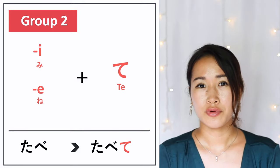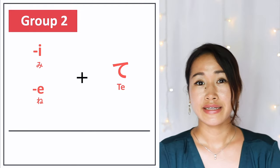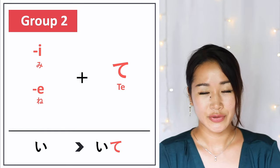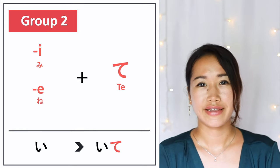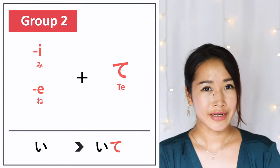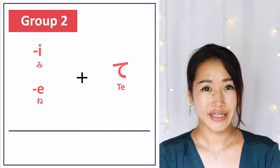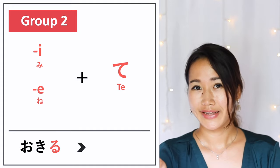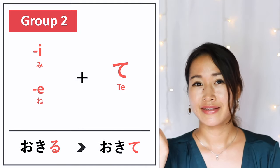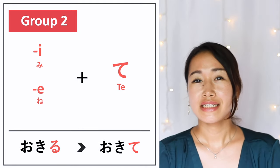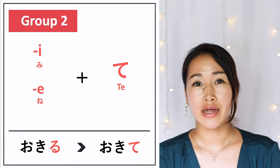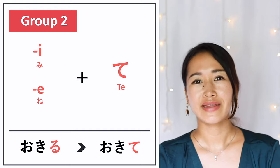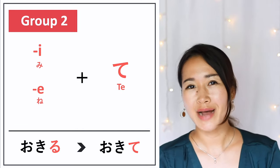Another example: 'iru' (to be, to exist) — you take out RU and add TE, so it would be 'ite'. How about to wake up? 'Okiru' — the TEFORM of okiru is 'okite'. This TEFORM is used to give an instruction like 'do this'. So if you say 'okite', it means wake up.